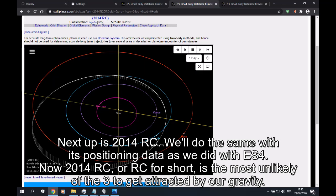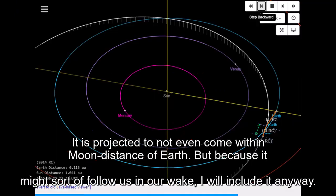Next up is 2014 RC. We'll do the same with its positioning data as we did with ES4. Now 2014 RC, or RC for short, is the most unlikely of the 3 to get attracted by our gravity. It is projected to not even come within moon distance of Earth. But because it might sort of follow us in our wake, I will include it anyway.